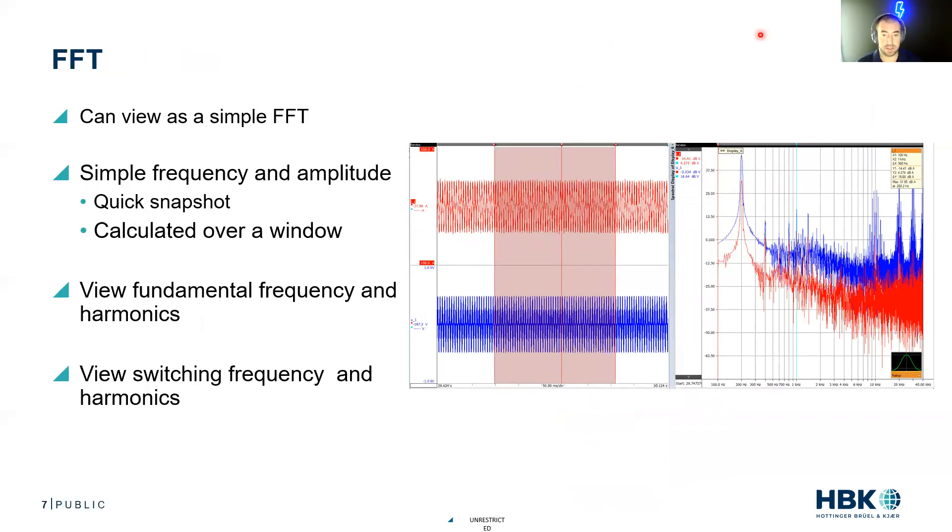So how does HBK do an FFT? The FFT is just a simple fast Fourier transform. You pick a region of interest, you set a frequency that you want to zoom in on, and it's a simple frequency and amplitude. You get a quick snapshot of what the frequency content is. Here I have a voltage and a current. I can see my fundamental frequency somewhere around 200 hertz.